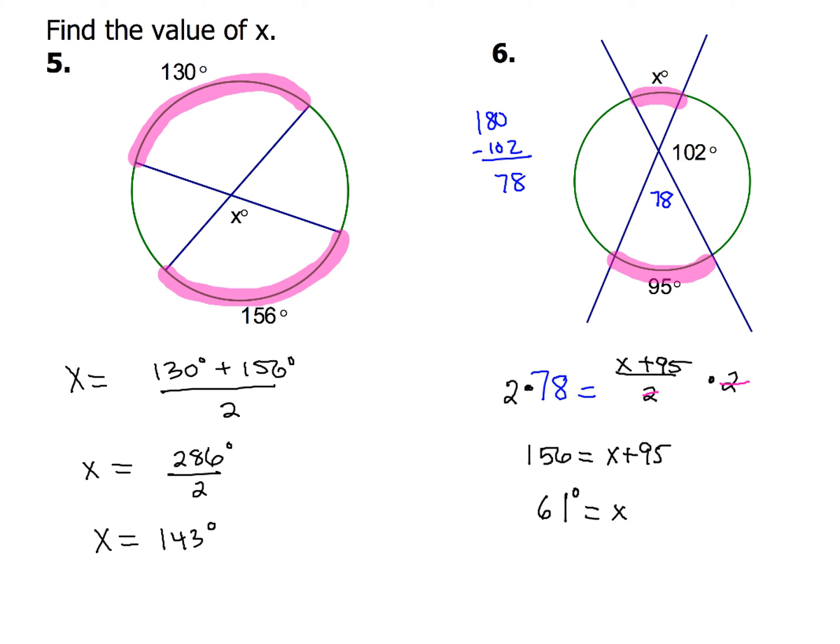So this one just involves one more step because you have to find the missing angle involved with the intercepted arcs. Just take your time and make sure you do your arithmetic correctly. Generally you'll add the two intercepted arcs together, divide by two, to find the interior angle. Those were two examples with the intersection of two lines inside a circle.